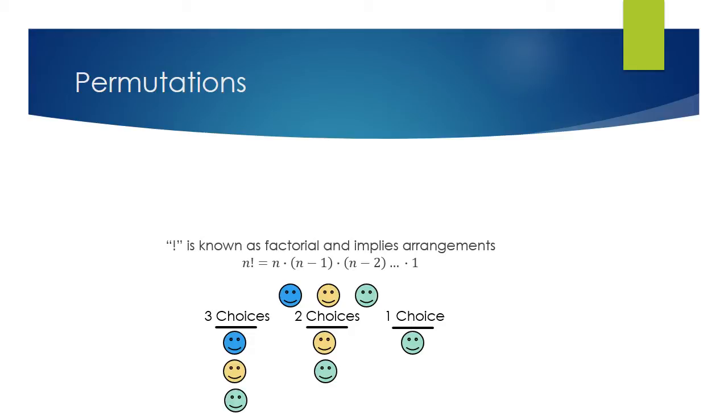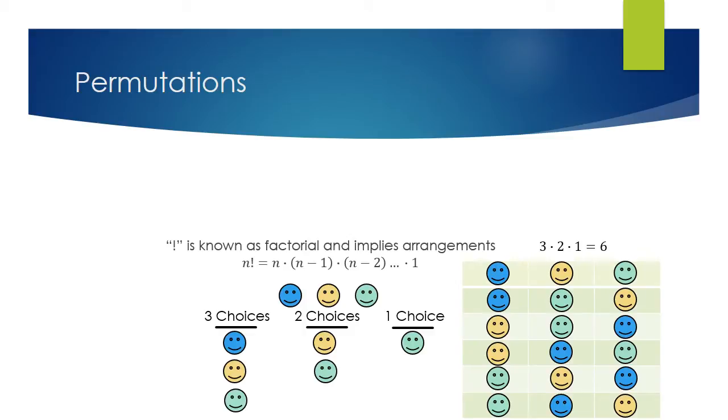So the way we count up the arrangements, then, is by multiplying the amount of choices in each step. So that would be three times two times one gives us six. So that's six total arrangements, and that's represented in this chart that I've put next to the smiley faces.